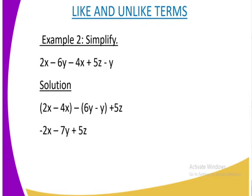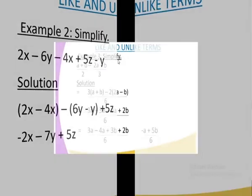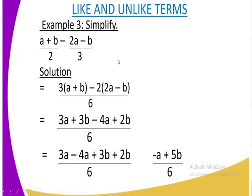You must be very keen with the signs. We have got another example whereby you're required to simplify (a+b)/2 - (2a-b)/3. Here what you normally do is you are going to get the least common multiple or the LCM of 2 and 3.